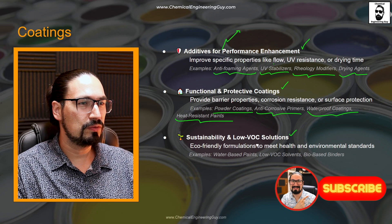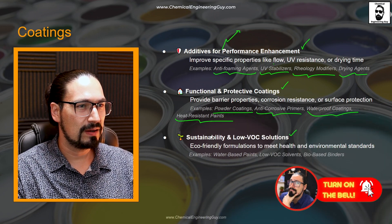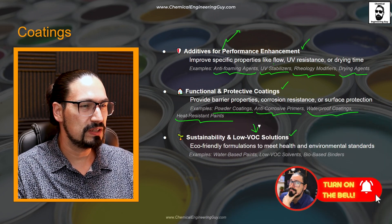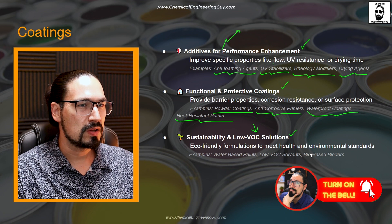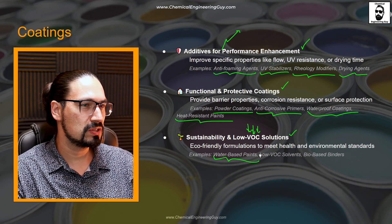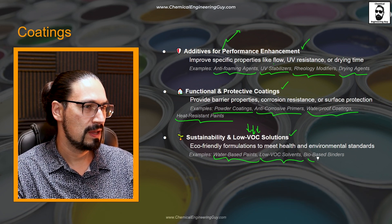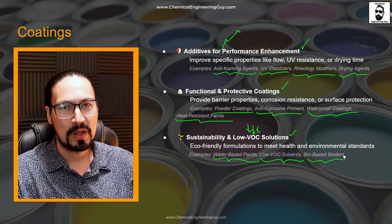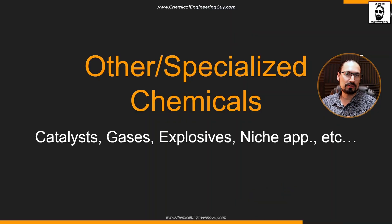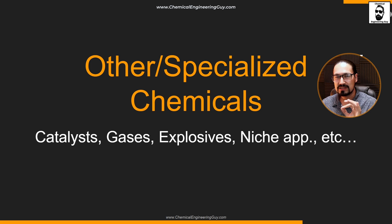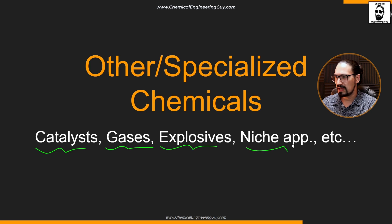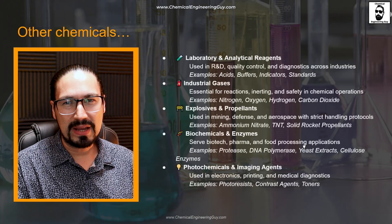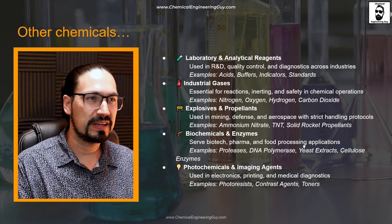Remember that we want to ensure sustainability. A good example is low VOC — volatile organic compounds — water-based paints, low VOC solvents, and bio-based binders. Specialized chemicals are other types of chemicals that may not be categorized in the previous list. We may be talking about catalysts, gases, explosives, or niche application chemicals that are hard to place in a specific category.